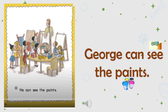George can see the paints. Okay, students — can George see the paints? Yes or no? Yes, George can see the paints. Okay, students — can George play with the paints? Yes, George can see the paints. Can George see the paints or the cell phone? Of course, George can see the paints. George cannot see the cell phones.